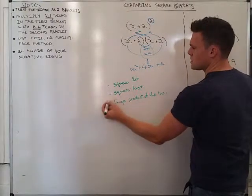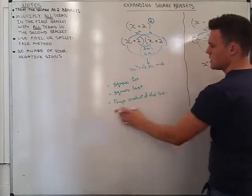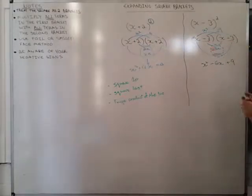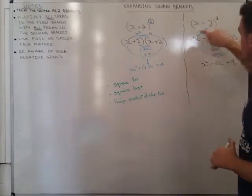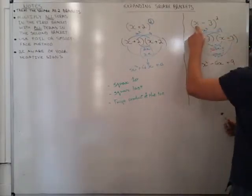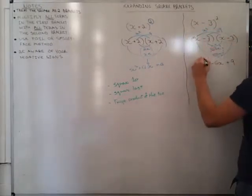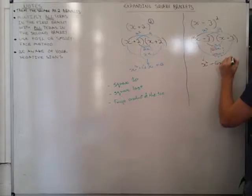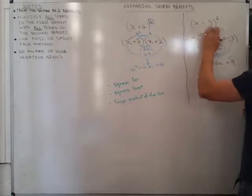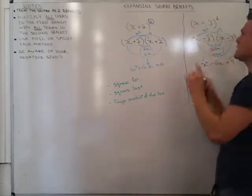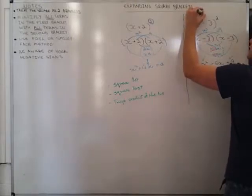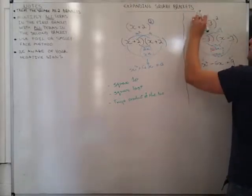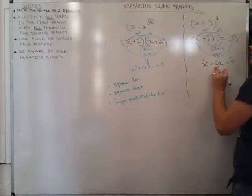So, square the first, square the last, and twice the product of the 2. I'll explain this, we'll go through it here. So, if I wanted to expand this, I would square the first, so I get x squared. I'd square the last, so negative 3 times negative 3 is going to give me positive 9. And then I'd twice the product of the 2. Now, the product means I'd multiply them together. So, I end up with negative 3x. And I double that. Negative 6x.